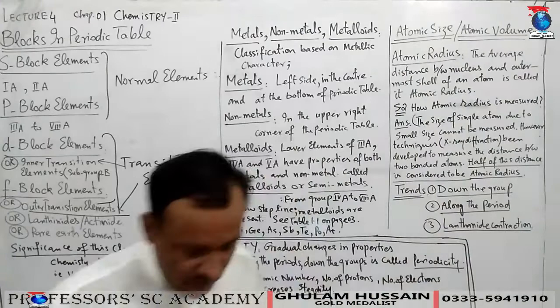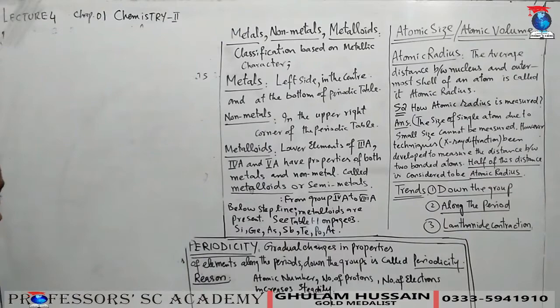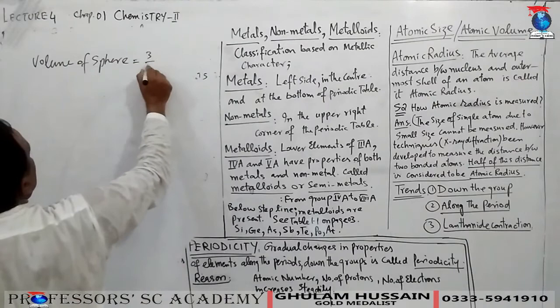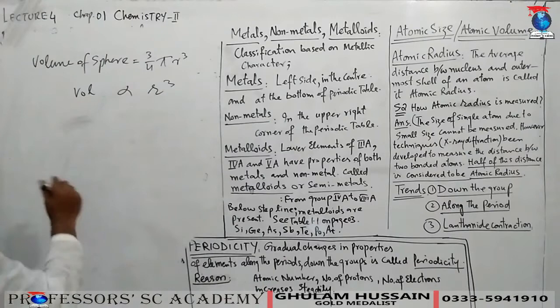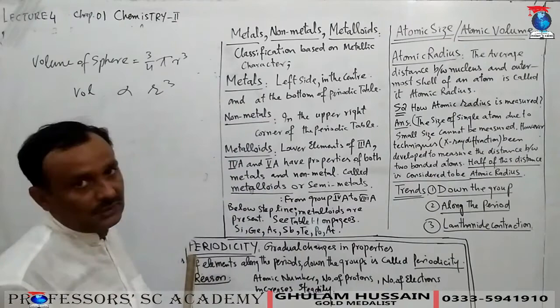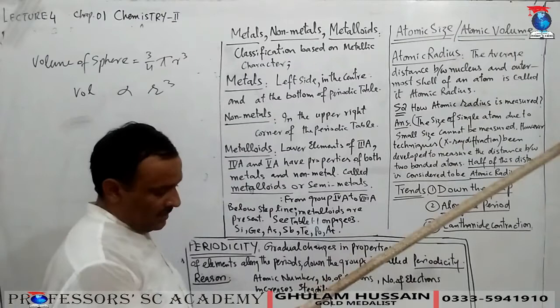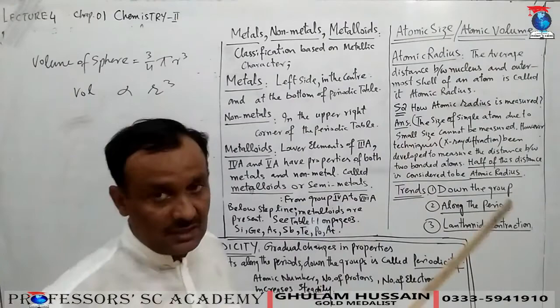Atomic size and atomic volume: if we consider an atom as a sphere, the volume of a sphere is (4/3)πr³, which means volume is directly proportional to the atomic radius. So atomic volume, atomic size, and atomic radius are all related. The atomic radius is defined as the average distance between the nucleus and the outermost shell of an atom.